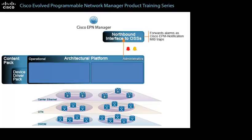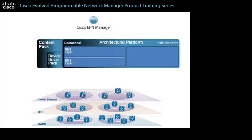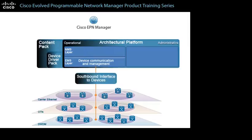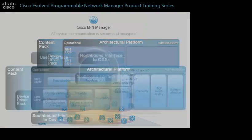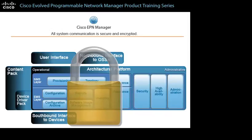The system also forwards alarms as Cisco EPM notification MIB traps. The EMS layer of the platform, which supports device communication and management, provides the southbound interface for interacting with network devices. The interface provides handlers for the following protocols: SNMP V2 and V3, Telnet, SSH, NetConf, HTTP, and TL1. All system communication is secure and encrypted, including client-to-server, server-to-database, server-to-northbound and southbound interfaces, and server-to-server in HA configurations.